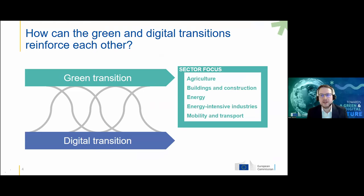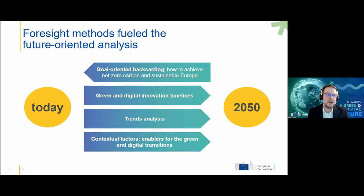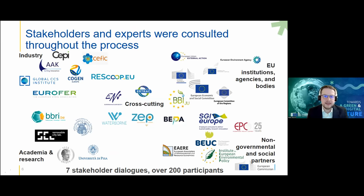We didn't only look at how digital technologies can help — we also looked at where the tension points are, because sometimes they actually go against the goals of the green transition. Our time horizon was 2050, and we back-cast what has to happen to reach the goals of the European Green Deal. This participatory process took around eight months and involved over 200 participants at seven stakeholder dialogues with stakeholders from industry, the private sector, NGOs, EU institutions, and academia.